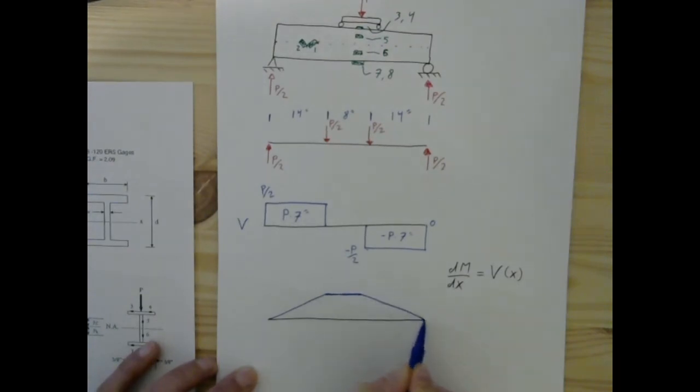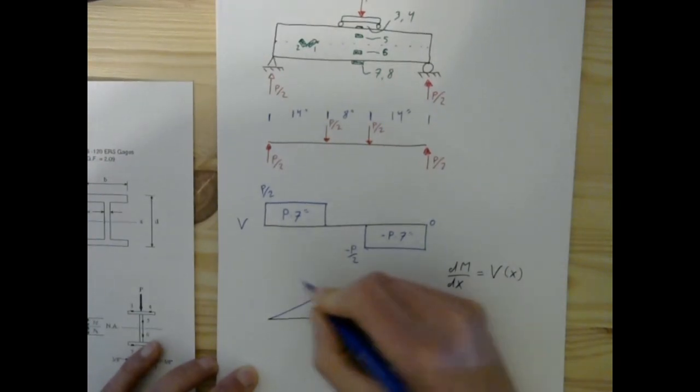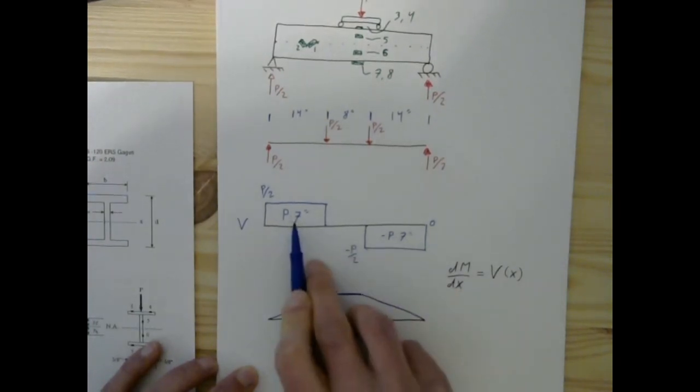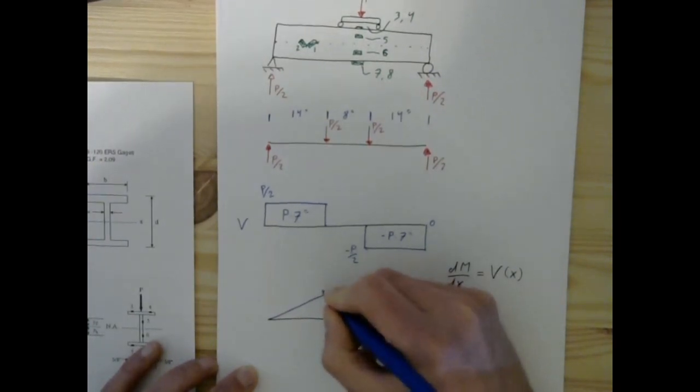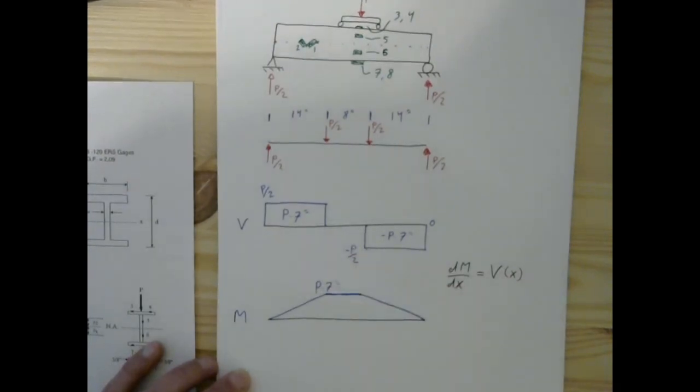Then we're going to go down. So the constant moment from here to here is going to be the area in this box, so this is going to be, the moment is going to be P times 7 inches.